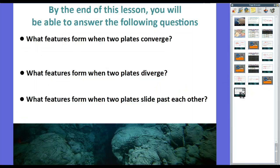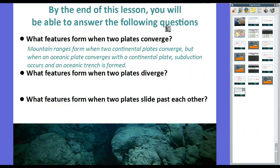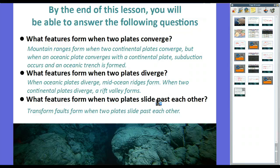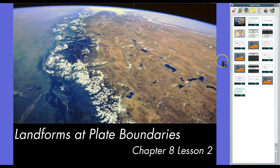Let's wrap up this lesson — it's a big review of the theory of plate tectonics. What features form when two plates converge? Mountain ranges form when two continental plates converge. When an oceanic plate converges with a continental plate, subduction occurs and oceanic trenches and volcanic islands form — we'll talk about volcanoes in the upcoming lesson. What features form when two plates diverge? Oceanic plates diverging form mid-ocean ridges; continental plates diverging form rift valleys like in Africa, with large freshwater lakes as an artifact. When plates slide past each other, transform faults form — the San Andreas fault is a great example where you can actually stand between two tectonic plates.